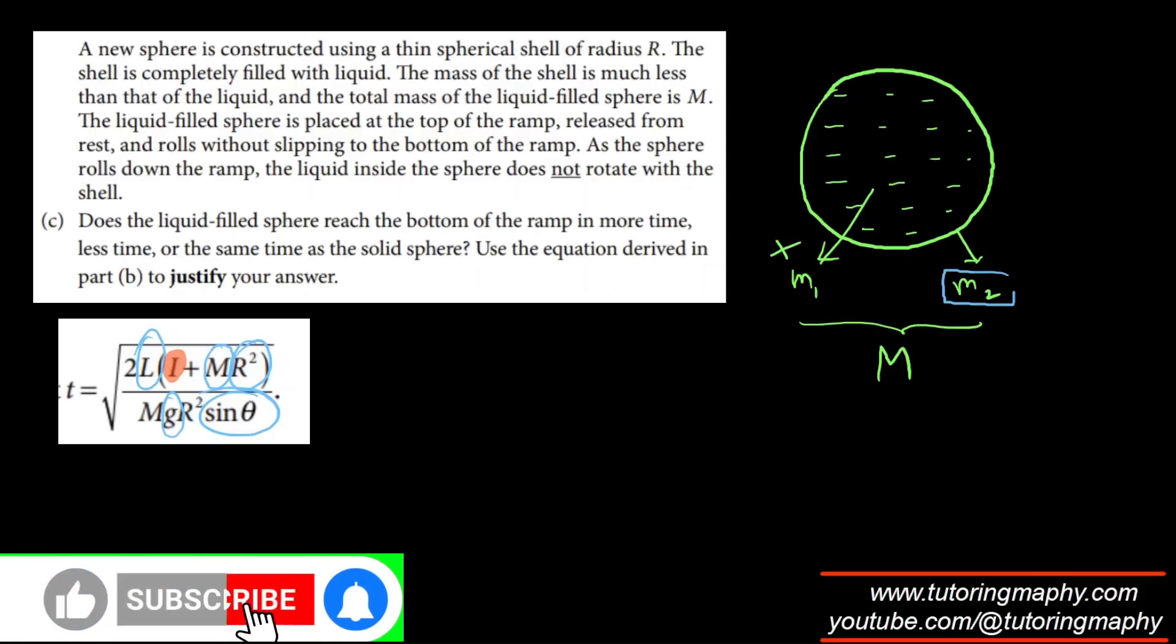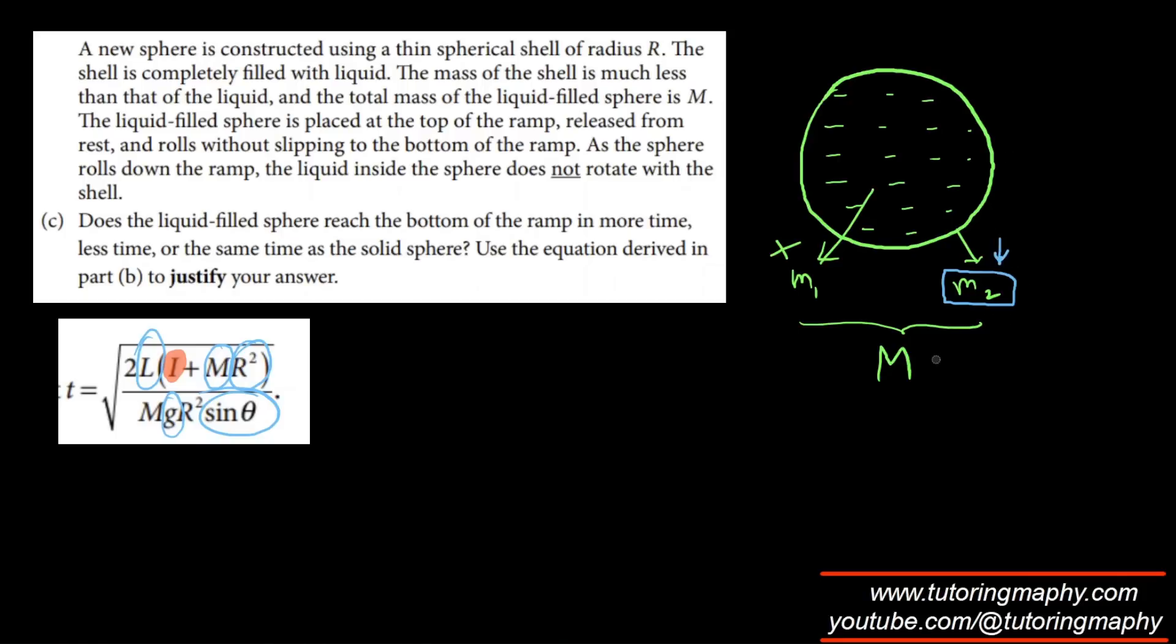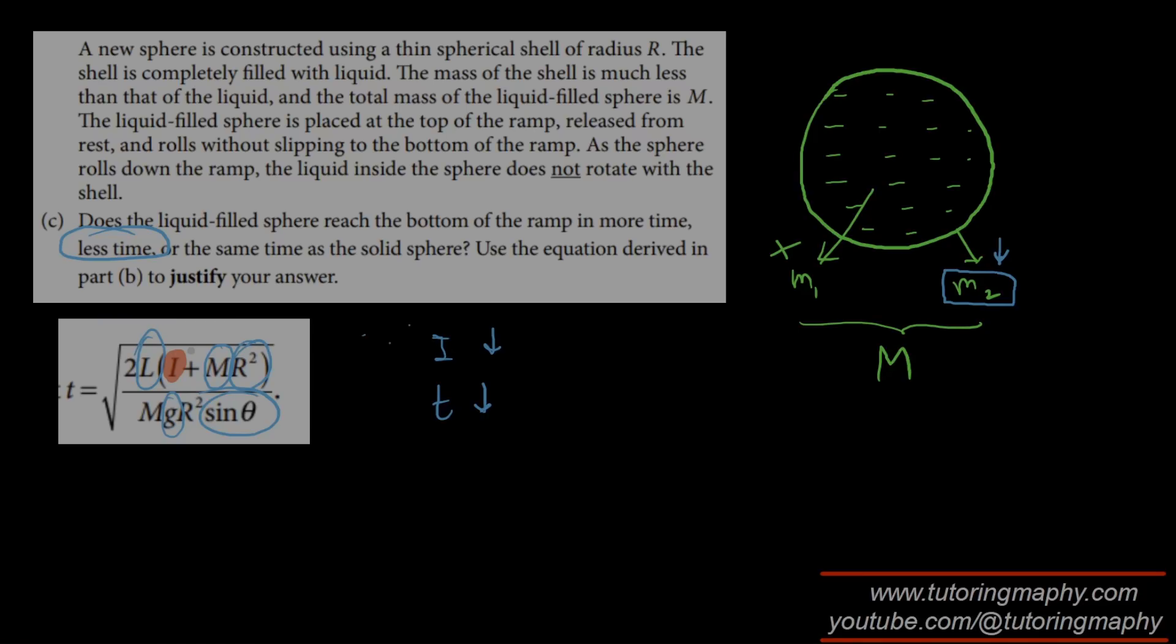Now, I very well know that the water is not rotating. So its moment of inertia will not be taken into account. Only the moment of inertia of the shell will be taken into account. And obviously, this has less mass compared to M, this is now less mass. So its moment of inertia will obviously be less than what it would have been had there was no water. Because now the mass has been shared. So since I is less, because I is only of the hollow sphere, the time is also less. So it will take less time because time is dependent on moment of inertia. Less moment of inertia means less time.